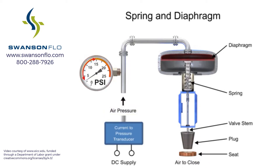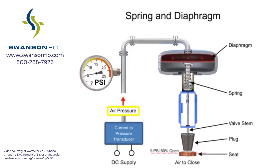Pressures between the 3 to 15 PSI range proportionally change the flow of the valve. For example, a pressure of 9 PSI applied to the diaphragm moves the spring and valve stem to 50% of operating range.